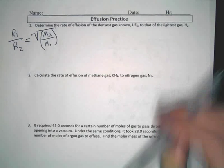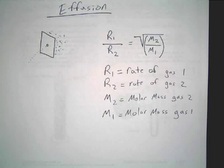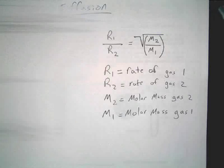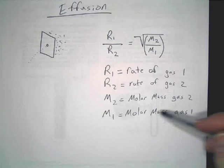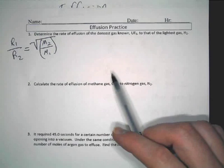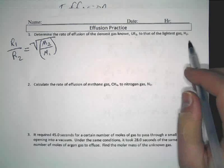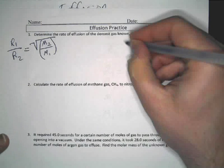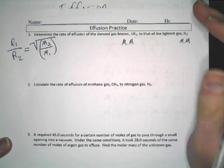We're doing the effusion thing. Remember our formula, and remember what everything means — that's important. Remember what every variable means. Now, here's what we've got to do. You'll notice we have molar mass and we have rates of gases.